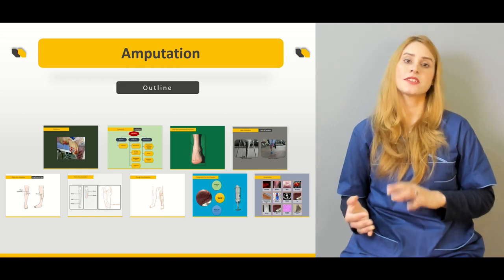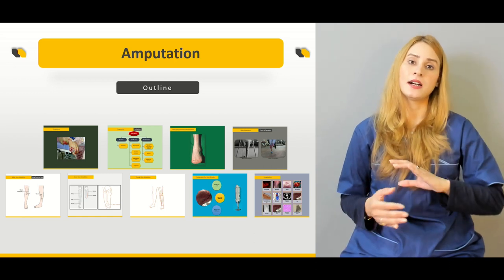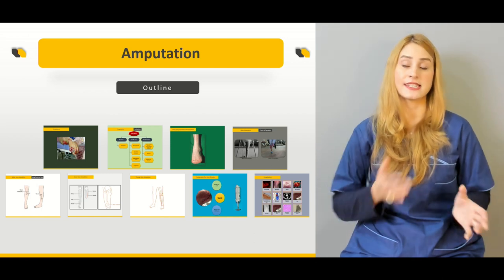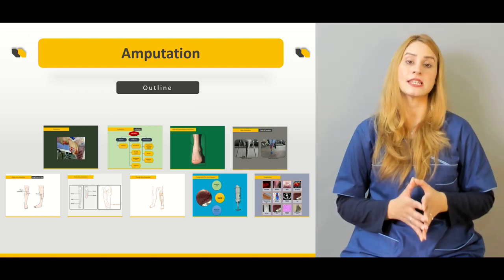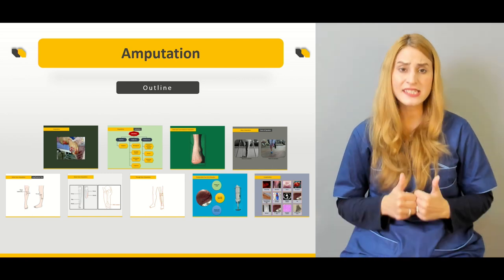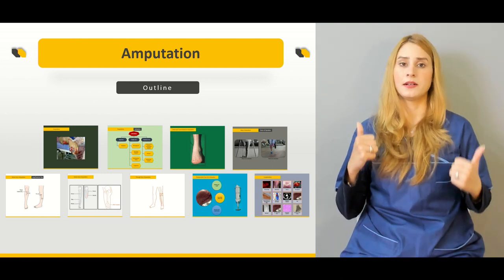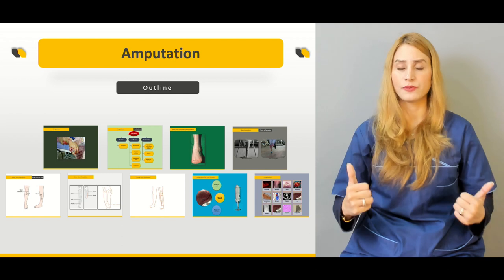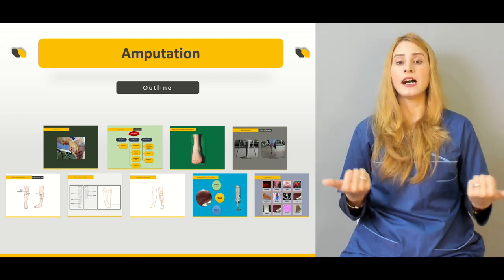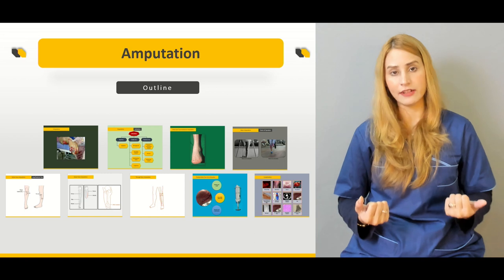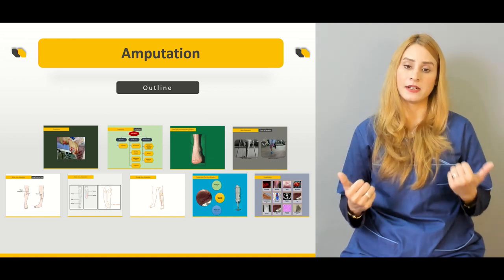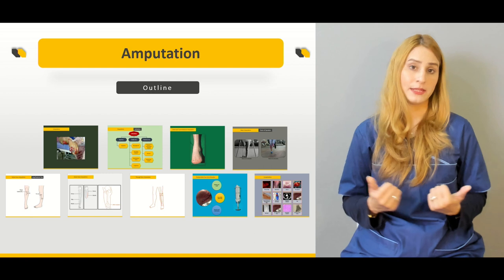We'll be talking about overall amputations, including upper limb amputations and the levels of upper limb amputations. We'll also be talking about lower limb amputations — more specifically in detail about the below-knee amputations and the lower limb amputations.